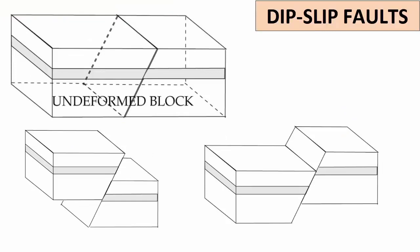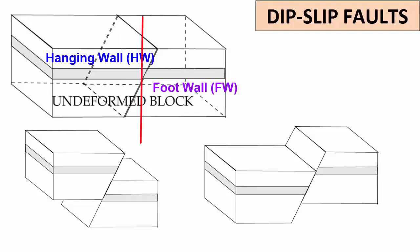For dip-slip faults, the top surface of the fault is the hanging wall — think of this as the block of rock that is hanging over the fault surface. The bottom surface of the fault is the foot wall. Draw a vertical line anywhere along the cross-section of a fault plane, and the hanging wall rocks will be sitting on top of the foot wall rocks. If you draw a person standing upright, their head is in the hanging wall and their feet in the foot wall.